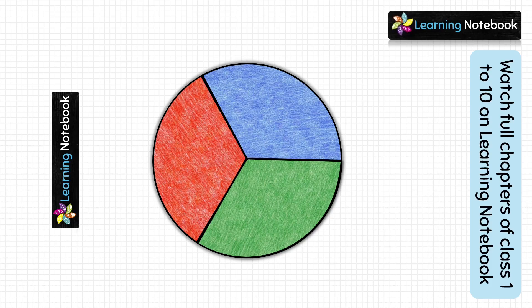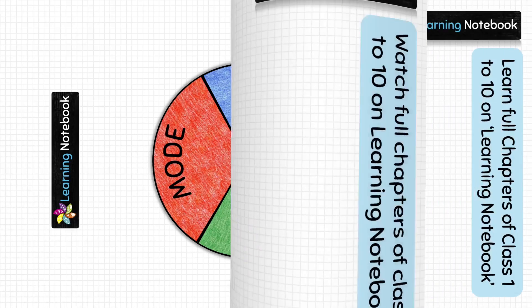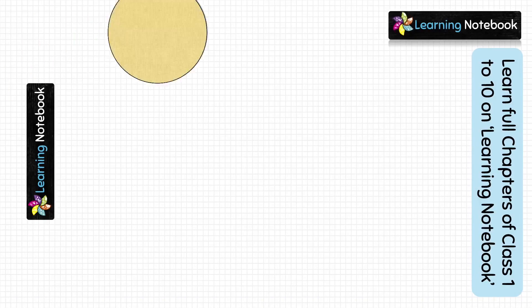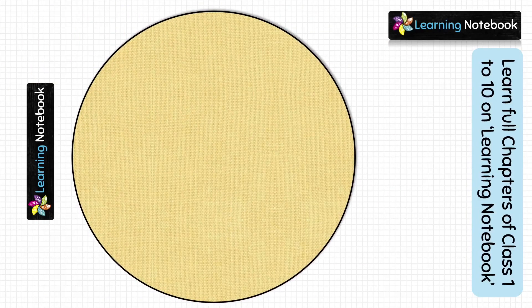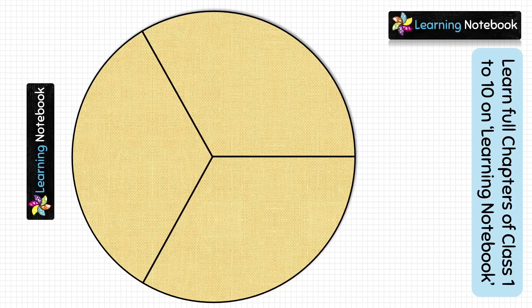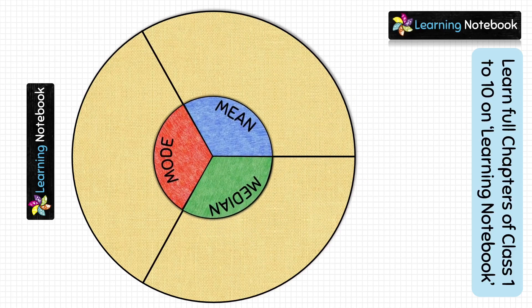Next, color these parts with your favorite colors and write the headings: mean, median, and mode. Then take the yellow circle and divide it also into three equal parts of 120 degrees each. Place the small white circle on the yellow circle, match their centers, and paste the small circle onto the yellow circle.